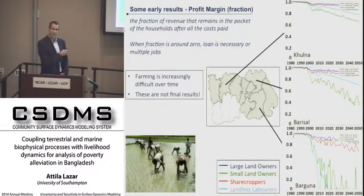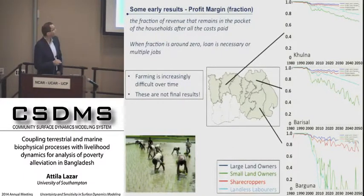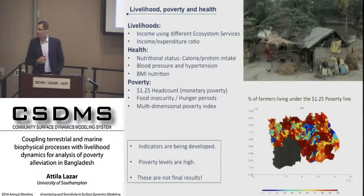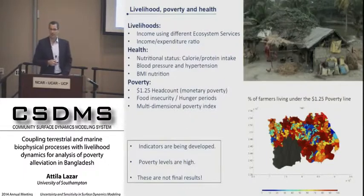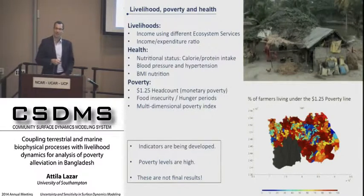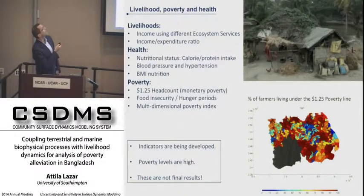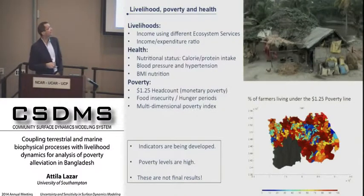When close to zero, they need either loans — so loan schemes are going to be important in this research — or they have to do multiple jobs to survive. Finally, some likely indicators that we are planning to include in the integrative framework output — these are the ones selected by my social scientist colleagues that are likely to be included. For example, income-expenditure ratio; we are going to have a routine to estimate the likely diet of a household based on wealth and background, and we can estimate calorie and protein intake, food insecurity, and hunger periods over time, because we are considering seasonal changes in the system.